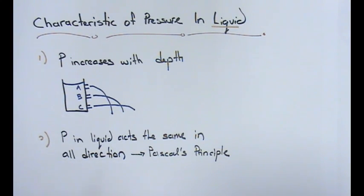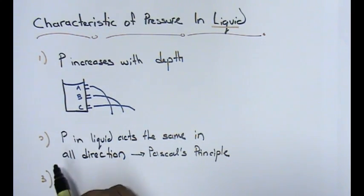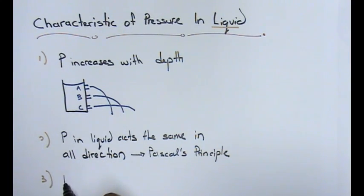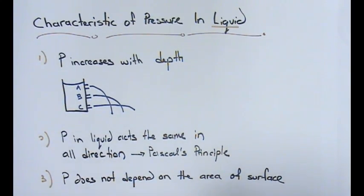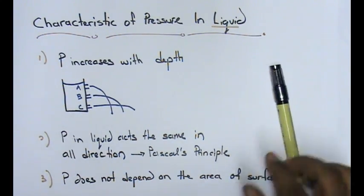The third thing that you need to understand is that pressure does not depend on the area of its surface. Does not depend on the area of surface. This is golden rule number three.